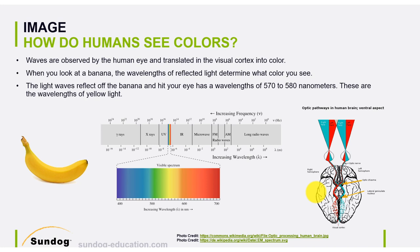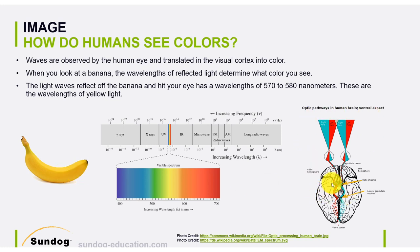Before discussing how we can represent an image digitally, we want to learn how humans see colors in general. Let's assume we have this banana and we want to see how humans, with their eyes and brain, can see the color yellow for instance.